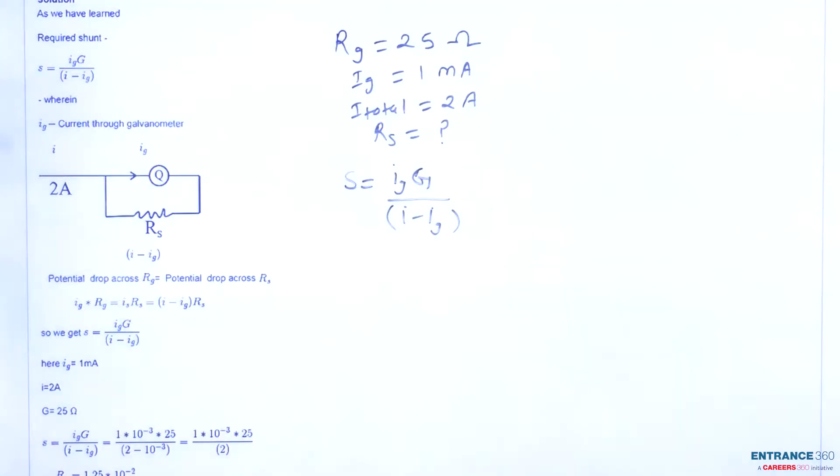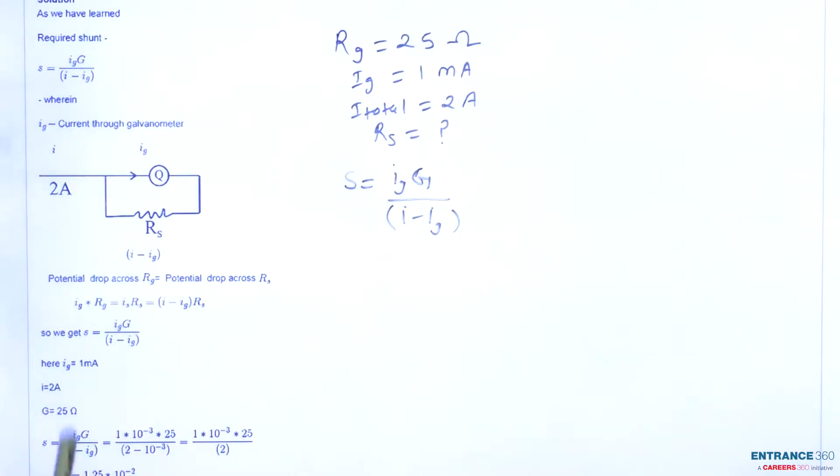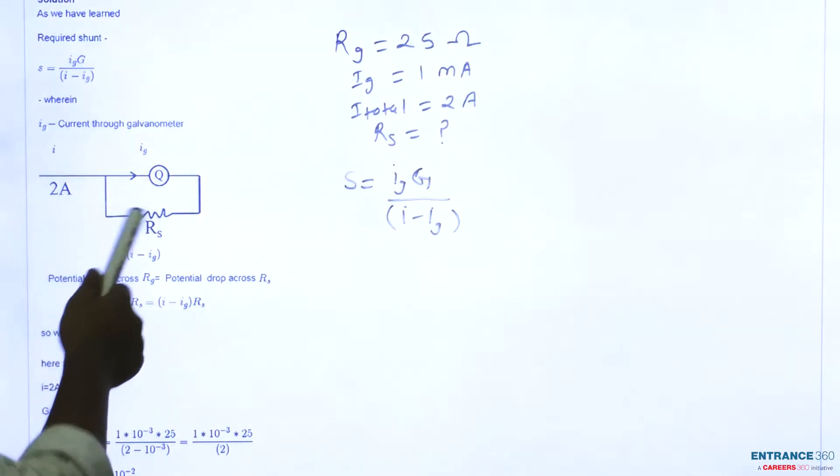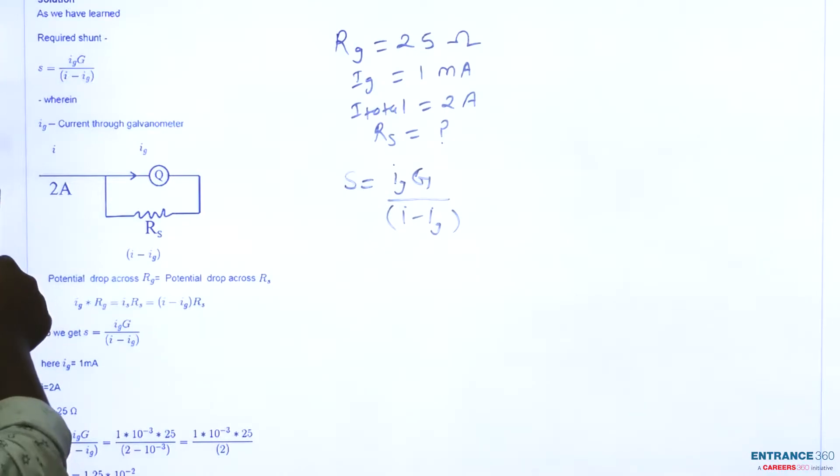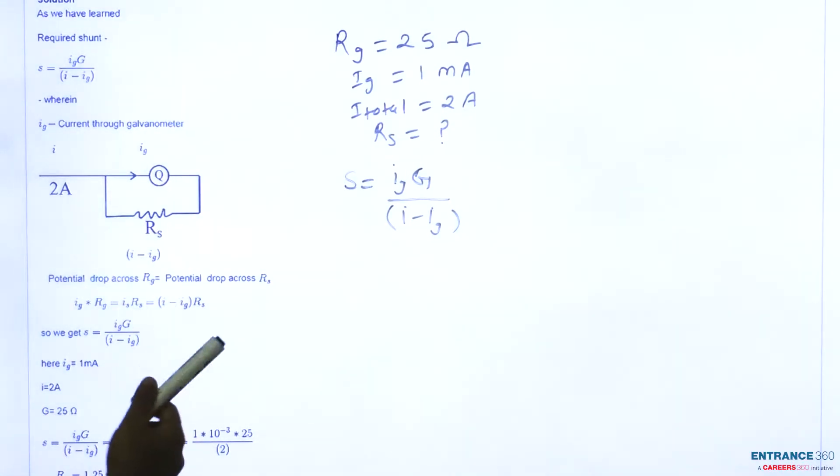We know the formula. Let's try to find out how we get this formula. So if we see this figure, the total current is, let's suppose, 2 ampere and this is galvanometer and this is shunt resistance. So as we all know, connecting a shunt resistance parallel to the galvanometer can convert it into ammeter. So the voltage drop across Rs will be equal to voltage drop across Rg.